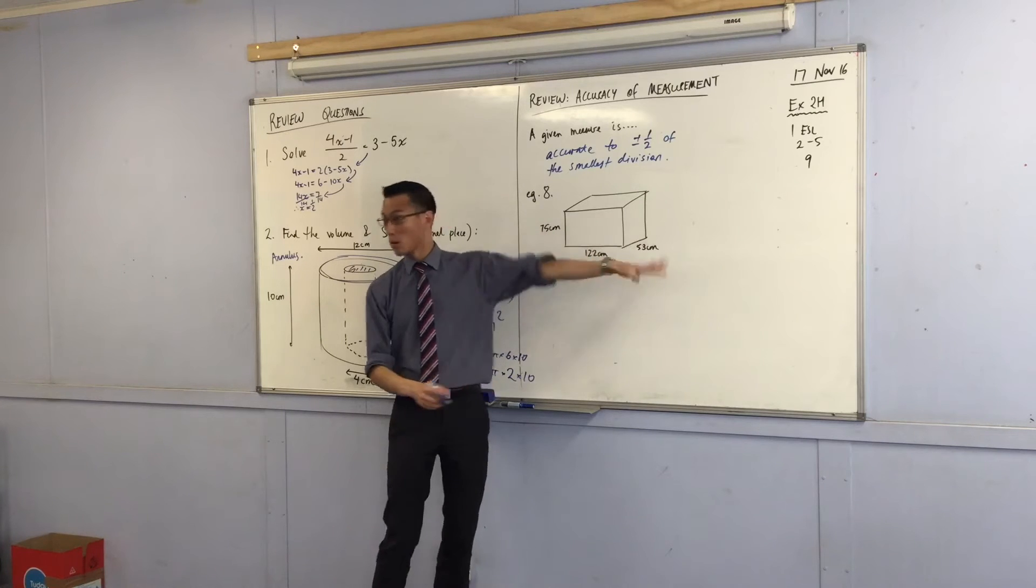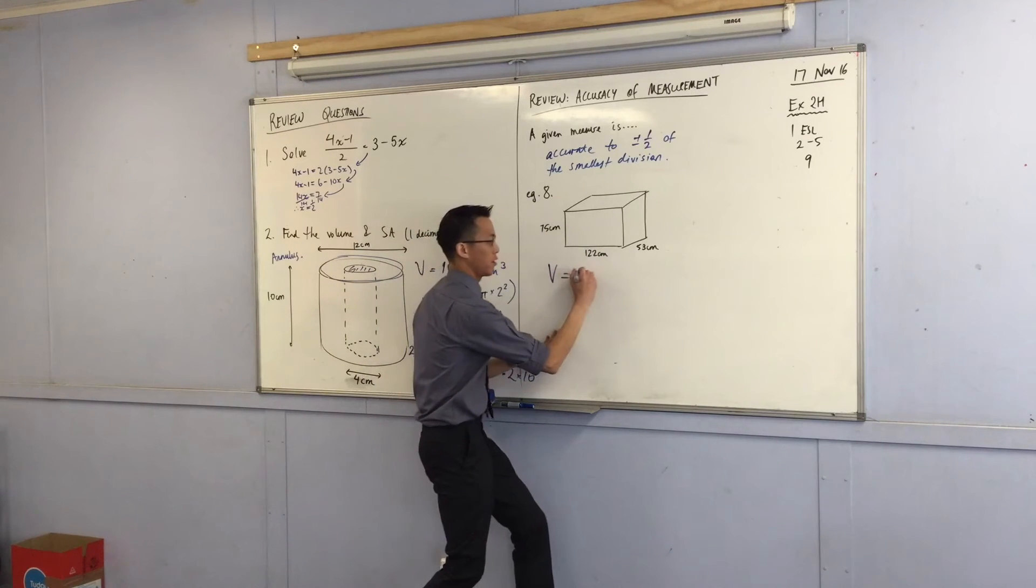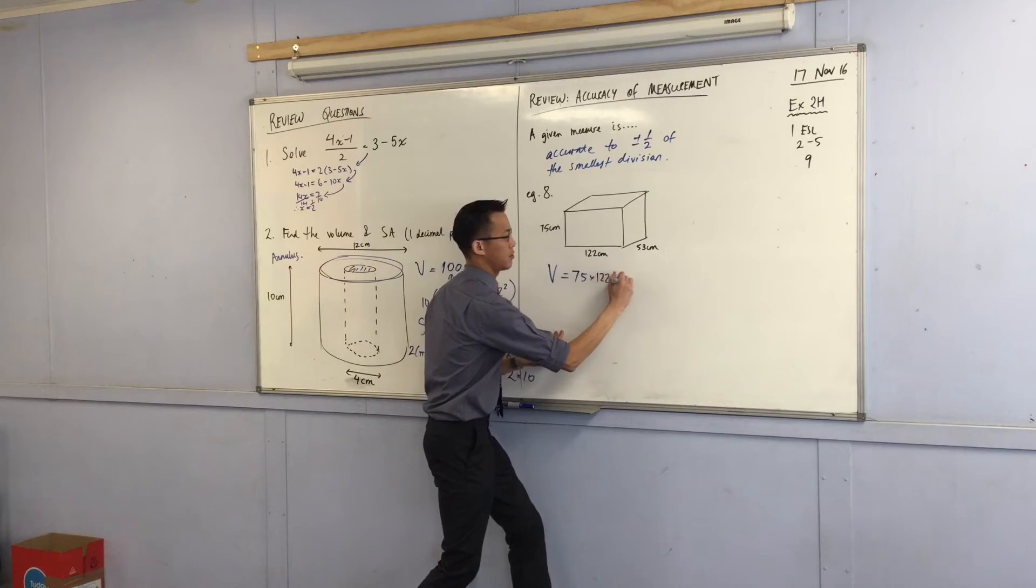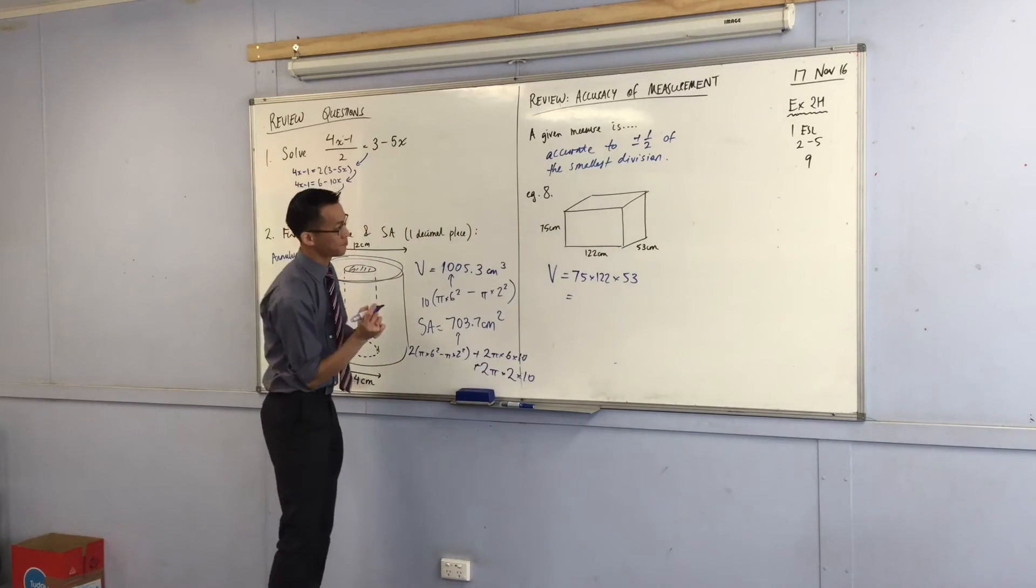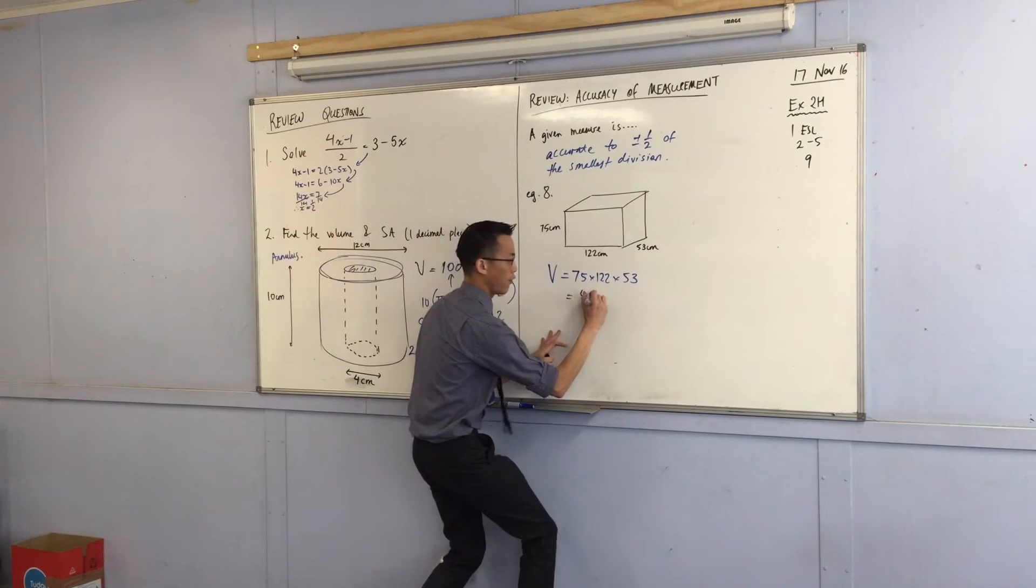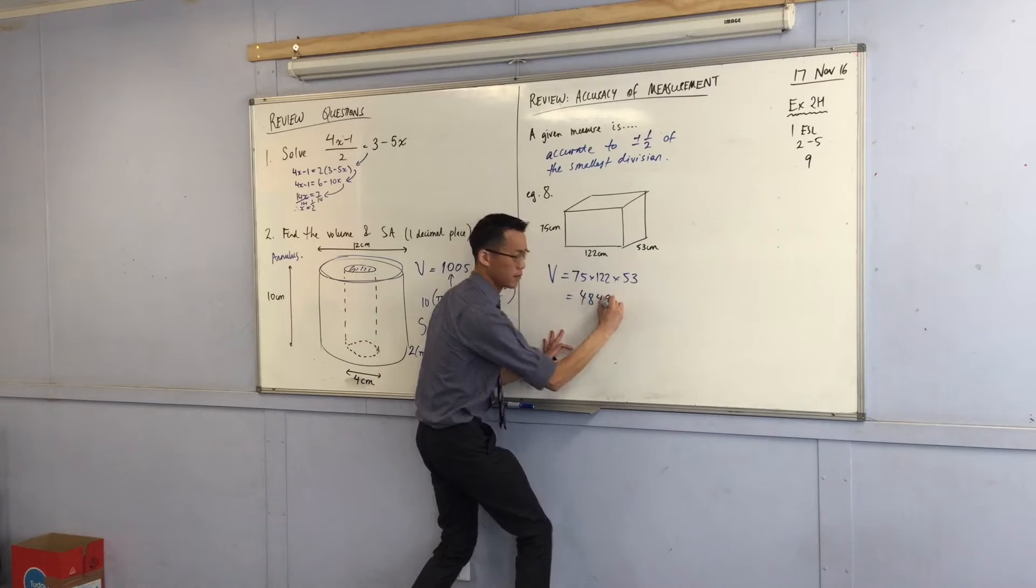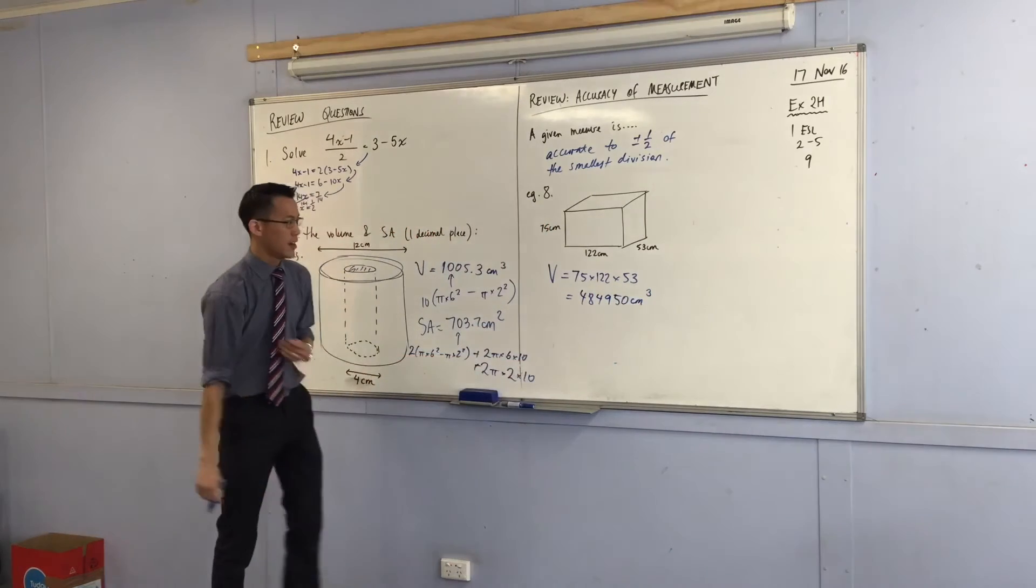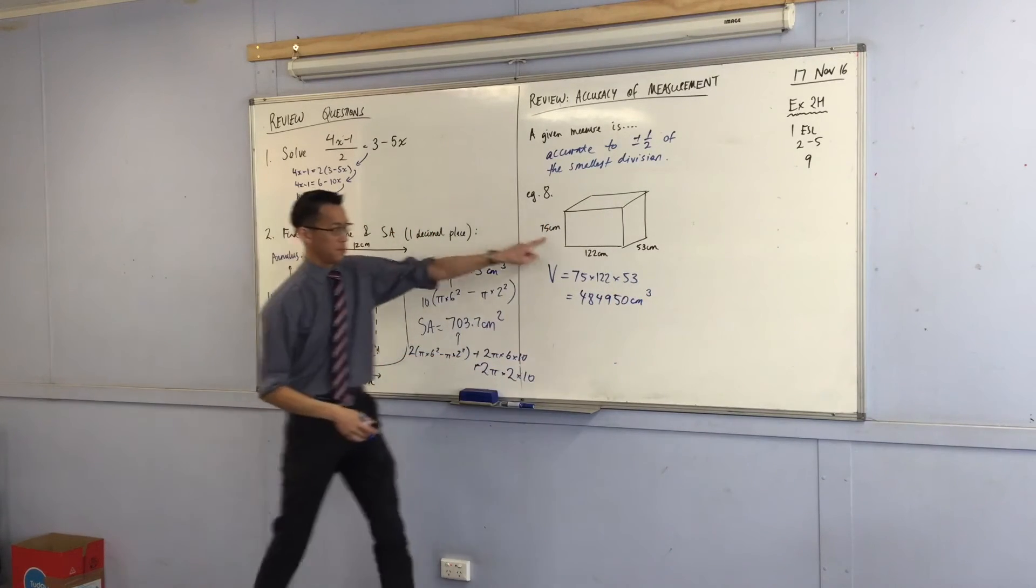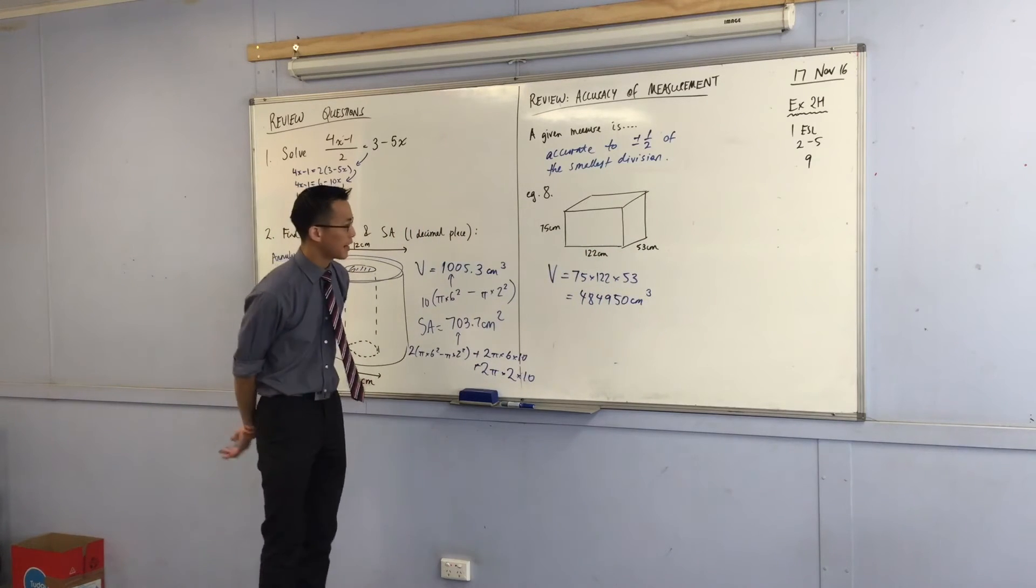Yeah, I'm just going to multiply them all together, aren't I? So I'm going to go 75, 122, 53. Can I have a number? 484950. And that's cubic centimeters. Yeah, pretty big number, but that's because these are pretty big numbers and we're multiplying here. So that's fine.